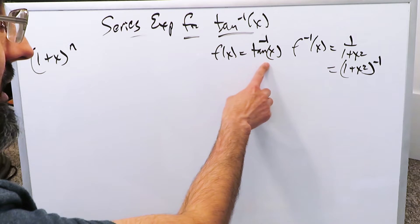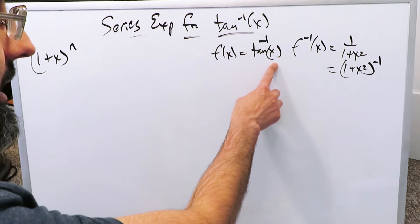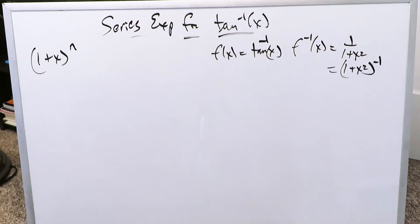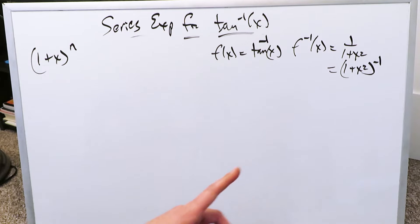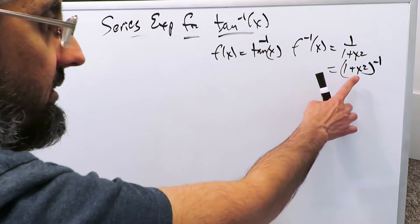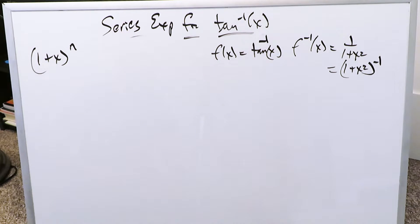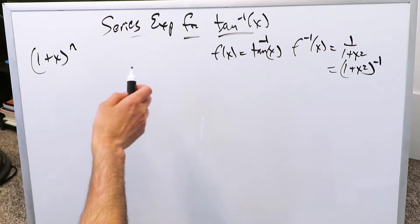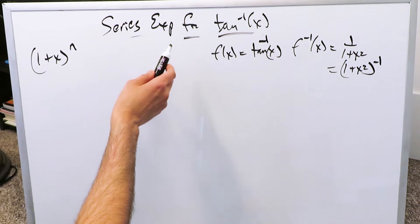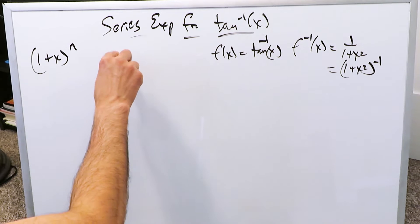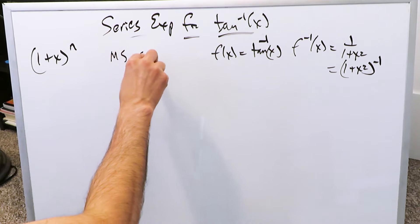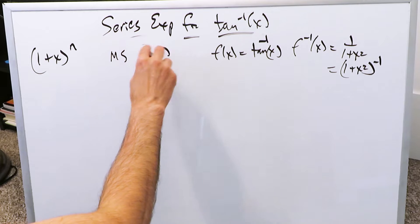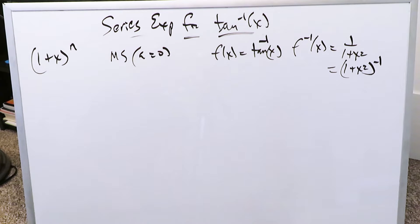This is my function: arctan. Its derivative is 1 over 1 plus x squared. You know that. If you rewrite that without the denominator, this is what we're looking at. Since we are looking at series expansion, we will be utilizing the McLaurin series with a equals 0.